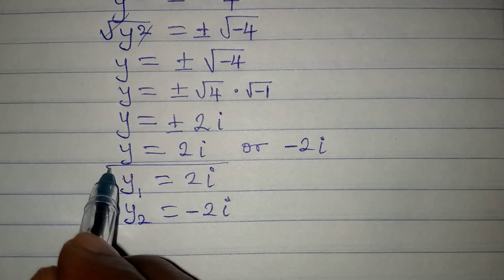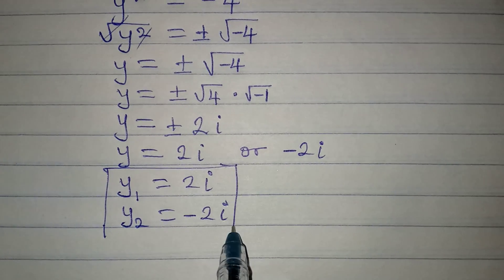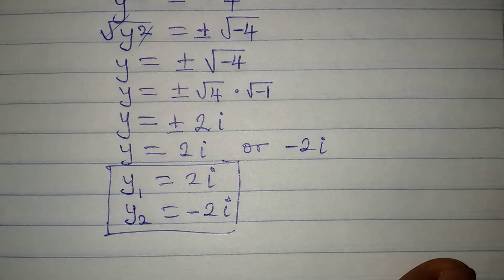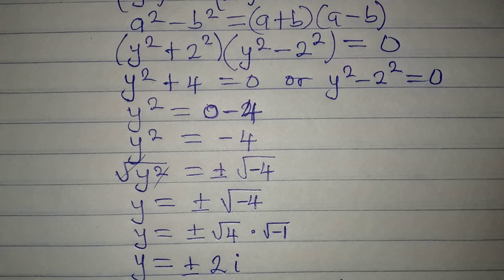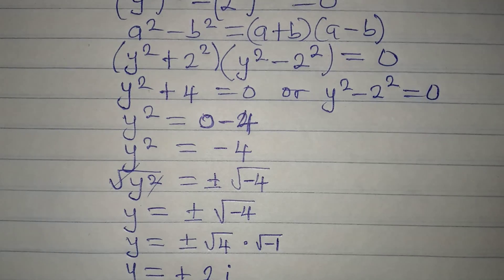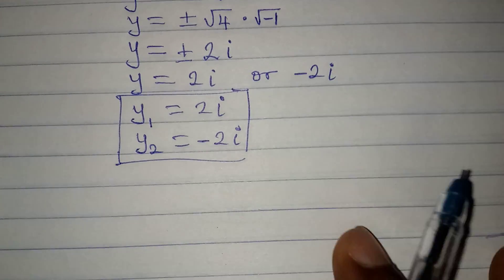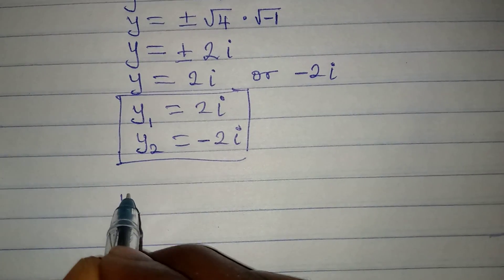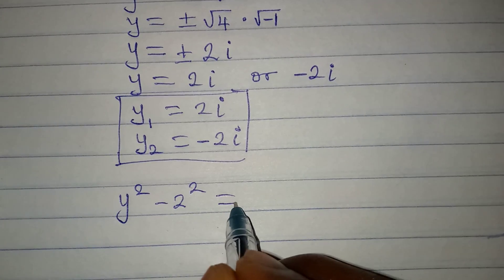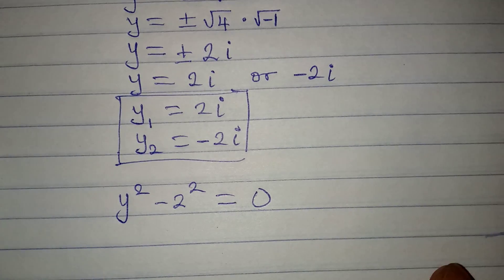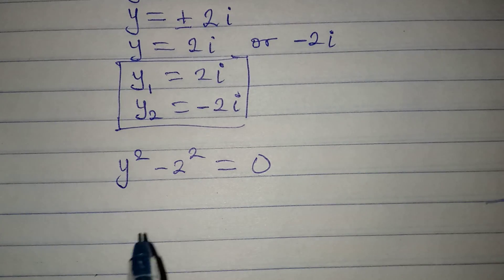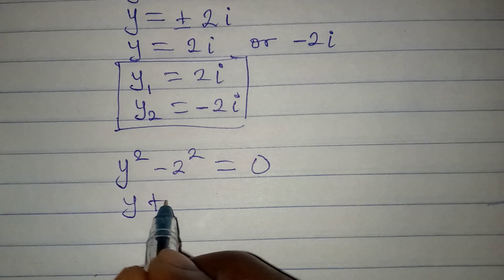Now let's get the other values of y from the second factor: y squared minus 2 squared equals 0. We can also apply the difference of two squares here, giving us (y + 2)(y − 2) equals 0.